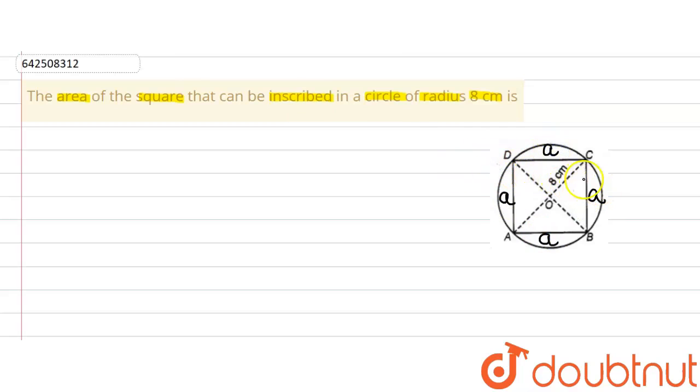Because we are supposed to find out the area of this square, we have to find out the value of A. Because this ABC triangle is a right angle triangle, all the angles of a square are 90 degrees, so I am going to use Pythagoras theorem here.